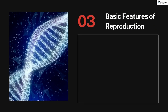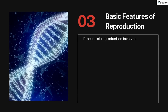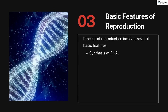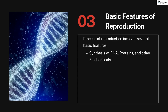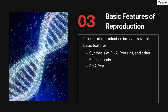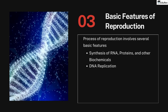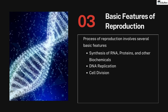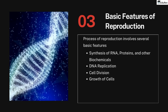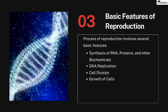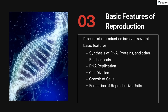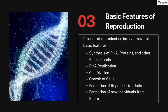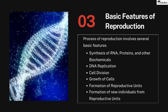The process of reproduction involves several basic features common to all modes of reproduction: synthesis of RNA, proteins, and biochemicals necessary for new cell tissue production; DNA replication to transmit genetic information to newly formed cells; cell division to produce daughter cells for growth and specialized cell production; growth of cells to develop mature reproductive cell structures; and formation of reproductive units — gametes or spores — and new individuals through sexual or asexual reproduction.